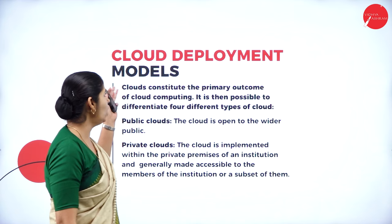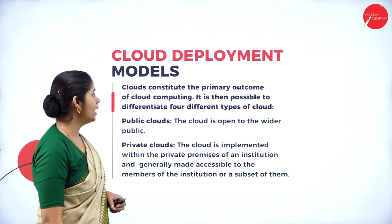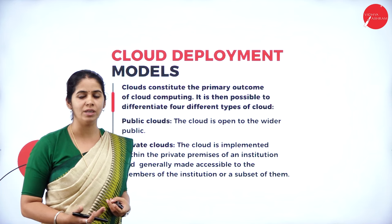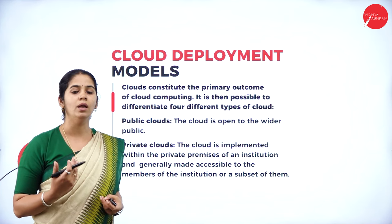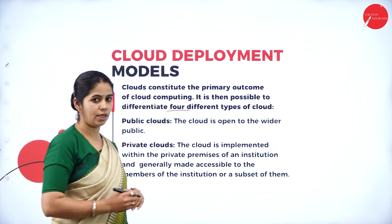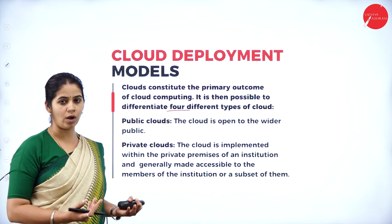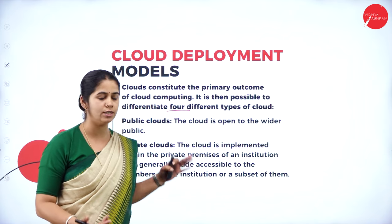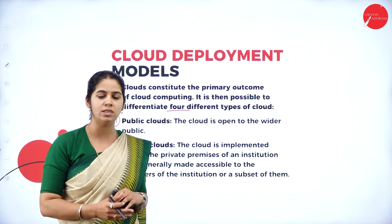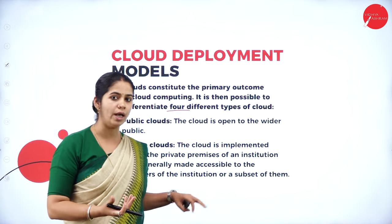Cloud deployment models constitute the primary outcome of cloud computing. We can differentiate four different types of cloud deployment models. The first category is public cloud — the cloud is open to the wider public, anyone and everyone can use it. The second category is private cloud — the cloud is designed specifically for one person, one organization, or one institute.